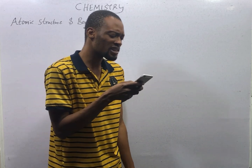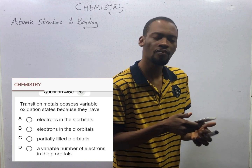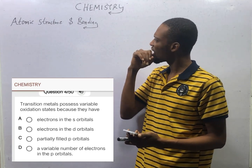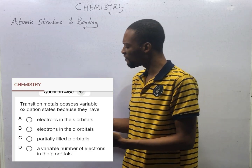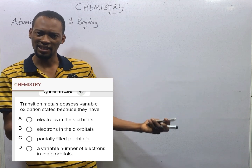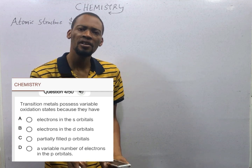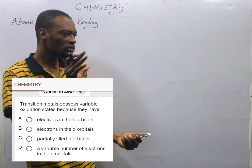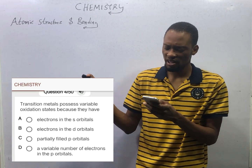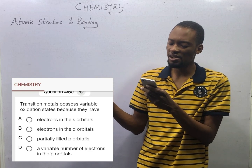Transition metals possess variable oxidation states because they have partially filled d-orbitals. Under transition metals in the periodic table, I explain that transition metals have variable oxidation states. Depending on the compound they are in, their oxidation states vary. For example, iron — you can have iron 3+, you can have iron 2+. The oxidation state is varying. The reason for this varying oxidation state in transition metals is because they have electrons in the d-orbitals.